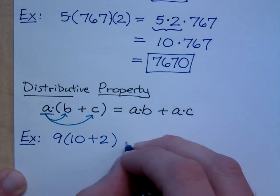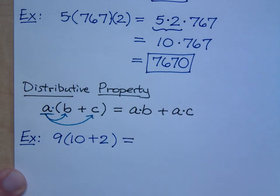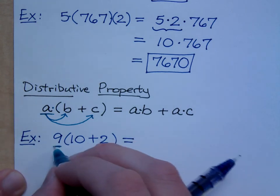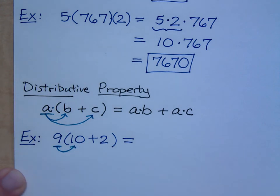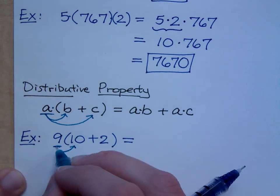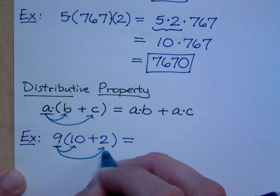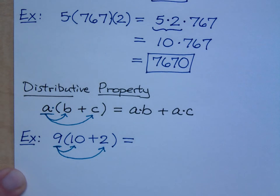you have a couple of ways of working this. If you use the distributive property, this says take the 9, and multiply it times the 10, and multiply it times the 2. So what's 9 times 10? 90. And what's 9 times 2? 18.